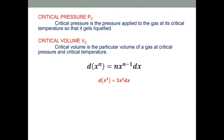For example, d of x cubed when differentiated becomes 3x squared — the power of x diminishes by 1 to give x squared dx. Similarly, d of 1 by x cubed, written as d of x to the power minus 3, when differentiated gives minus 3 x to the power minus 4, since minus 3 minus 1 equals minus 4, times dx.